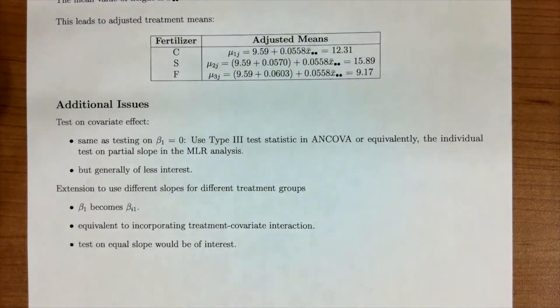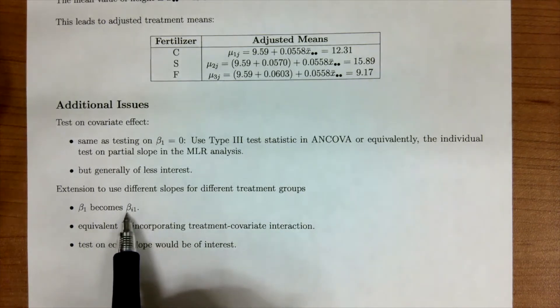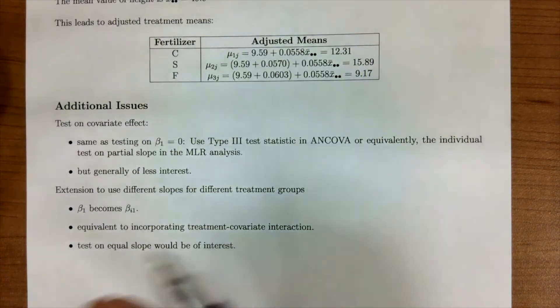There are extensions of ANCOVA where you can use different slopes as well. So if we go back to our picture, maybe we expect that the slopes of the fertilizer to be different. We can incorporate that by now treating beta ij so it changes for the treatments. This would be equivalent to incorporating a treatment covariant interaction and you would be interested if the slopes of these treatments are equal or not.